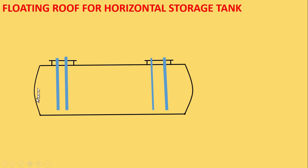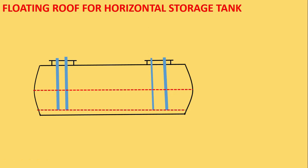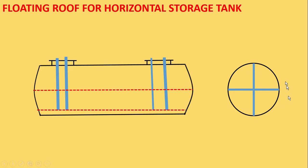The issue for installing a floating roof is because of the variable length of the tank. At the middle section the length is full, but towards the ends it gets reduced because of the dish dent. Also, at the cross section, stiffeners are provided to retain the shape of the tank, and these stiffeners will also create a hurdle for installing a floating roof.